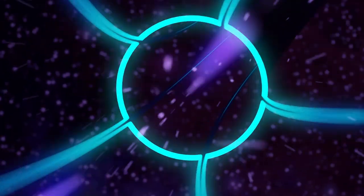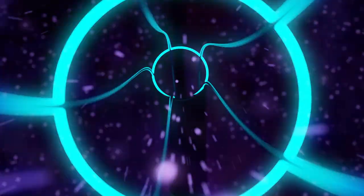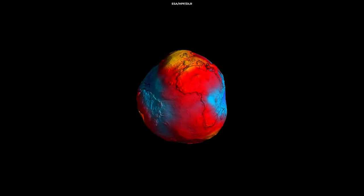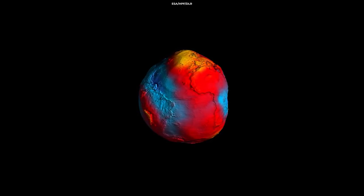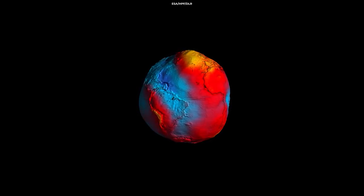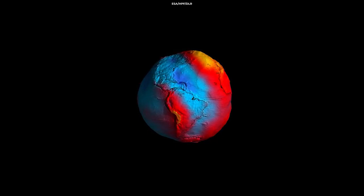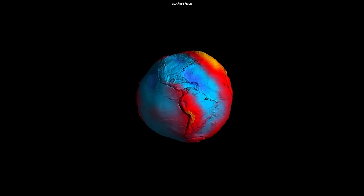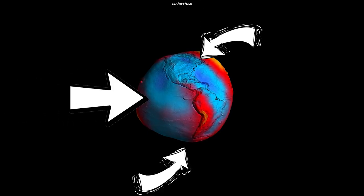Before we wrap things up, let's have a little fun with some gravity-related trivia. Did you know that gravity isn't the same everywhere on Earth? That's right, due to variations in our planet's shape and density, gravity is slightly stronger at the poles than at the equator.